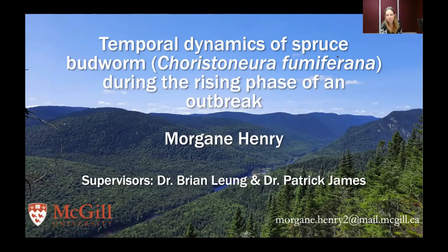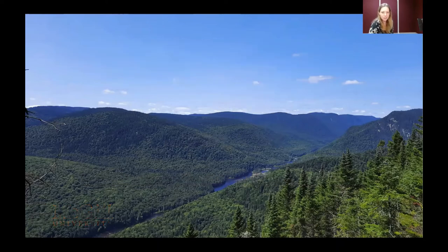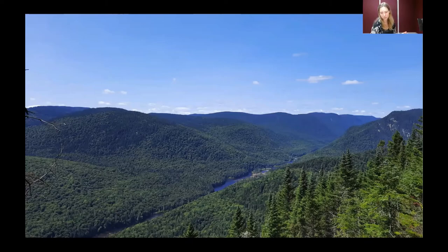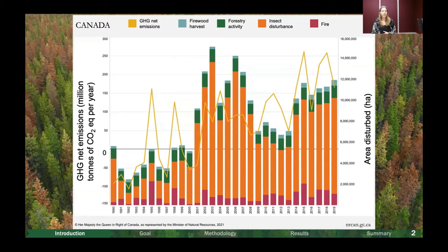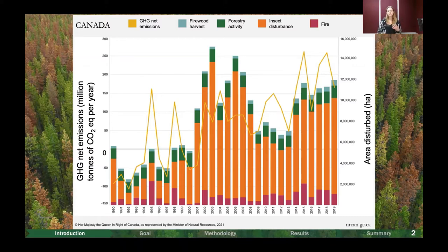Hi everyone. I'm Morgan, happy to share work from my PhD thesis at McGill, also supervised by Patrick at the University of Toronto. Forests around the globe are dealing every day with potential enemies, and forest disturbances play an important role in shaping the forests as we know them. In Canada, the areas impacted annually by different disturbances include forestry at the top, fire, and insects in orange. It's very clear that outbreaks of insects are the main disturbance of Canadian forests, resulting in important economic losses and massive carbon releases into the atmosphere.